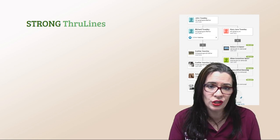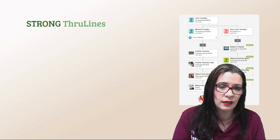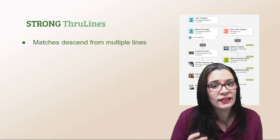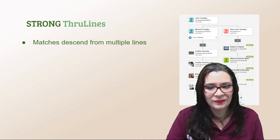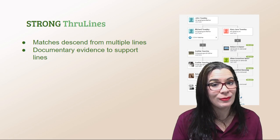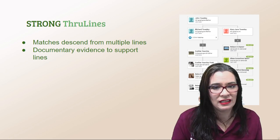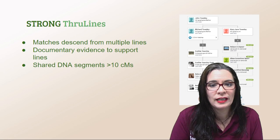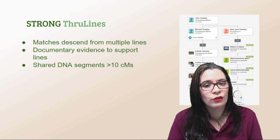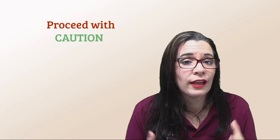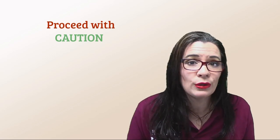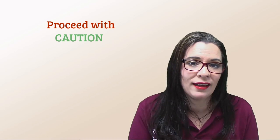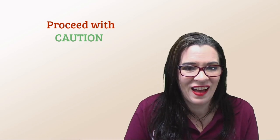So what would be an example of a strong through line — when you still need to validate with other records and genetic genealogy combination strategies, but this is a good theory to investigate? When your matches come from multiple descendancy lines, you have documentary evidence supporting these lines, and most of your centimorgans are larger than about 10 centimorgans shared with your match. Ancestry through lines are a cool tool — one that we can use to help us process our matches. The only thing we need to stop doing is calling them 'true lines' until we've done the research to validate the tree.